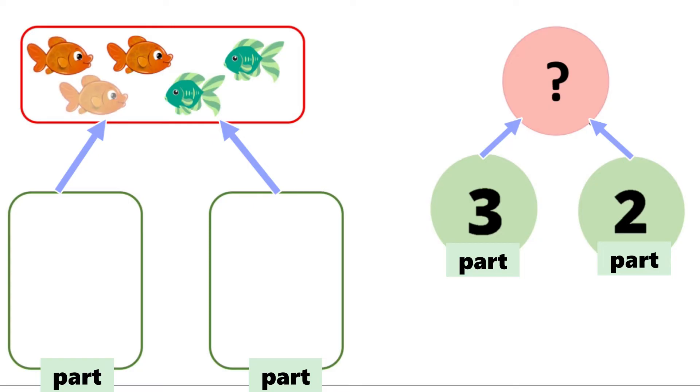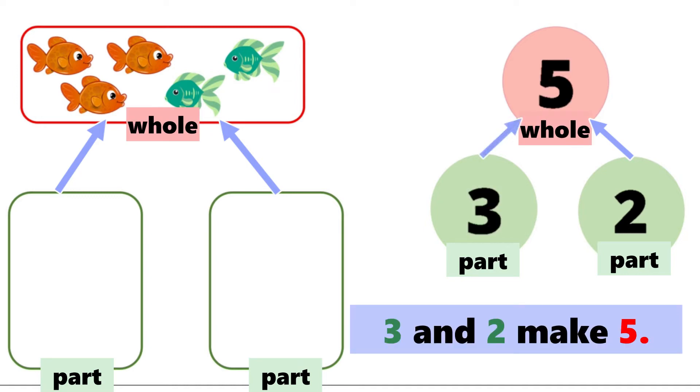We have one, two, three, four, five. So we write five. So three and two makes five. Part and part makes a whole.